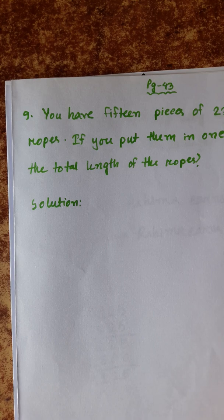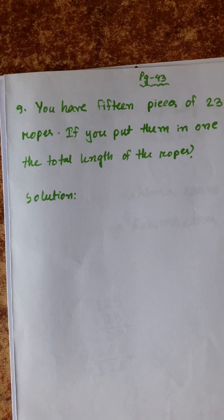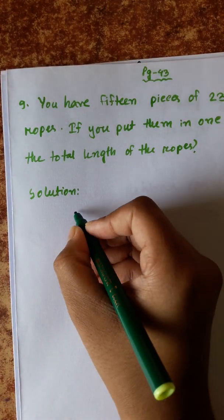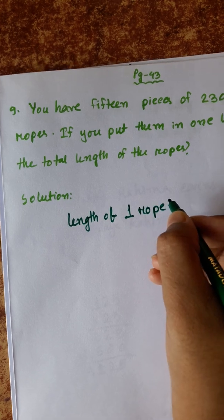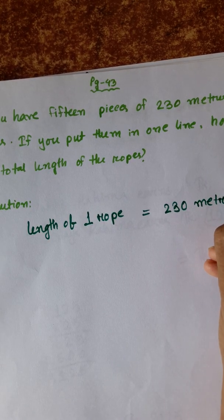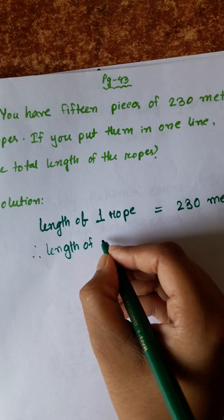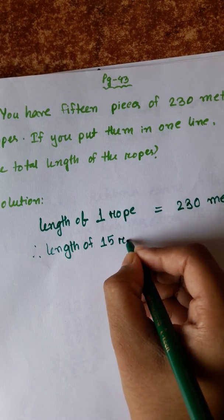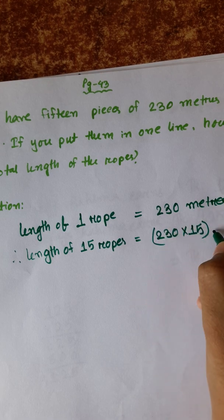So, there are 15 pieces of 230-meter rope. If we join all 15 pieces in a line, what is the total length? We can write: length of one rope is equal to 230 meters. Therefore, length of 15 ropes is equal to 230 into 15 meters.